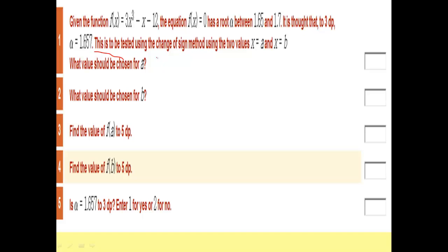So, if alpha equals 1.657 to three decimal places,